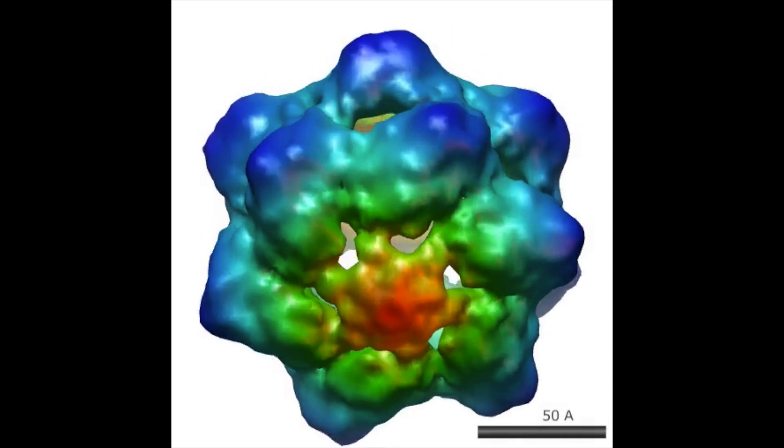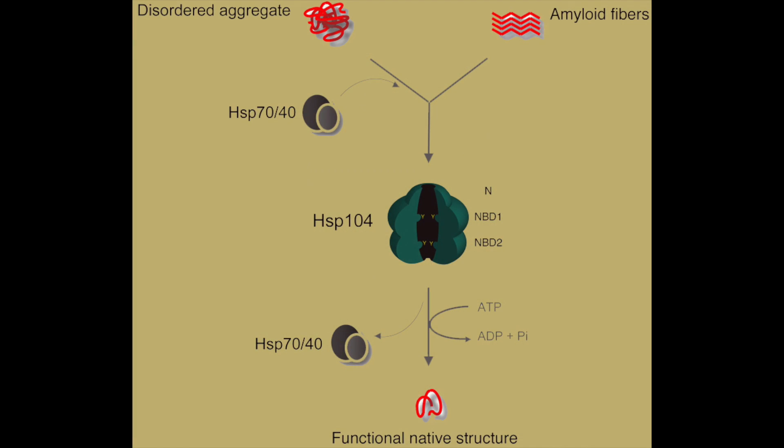As a conserved hexameric protein disaggregase, HSP-104 functions in yeast in collaboration with chaperones HSP-70 and HSP-40. It couples ATP hydrolysis with disaggregation of amyloid fibrils and amorphous aggregates in order to return them to a soluble functional state.